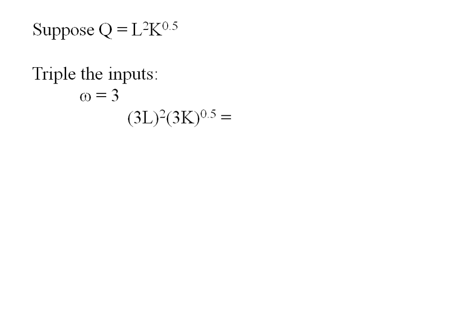My labor term is squared, so I need to square 3L. And my capital term is raised to the 0.5, so I need to triple capital and then raise that whole term to the 0.5.